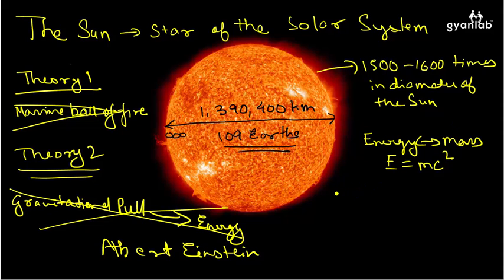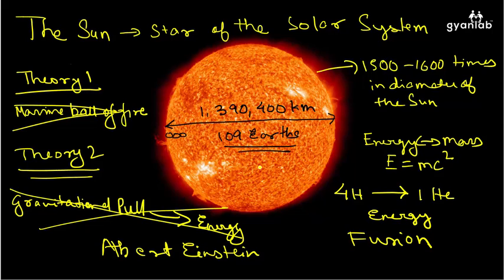What essentially is happening at the surface of the Sun is that four hydrogen molecules are reacting together to form one helium molecule, and this is releasing a huge amount of energy. This is the energy that we get from the Sun, and this reaction is called a fusion reaction. This is what happens at the Sun and how it gets its energy.